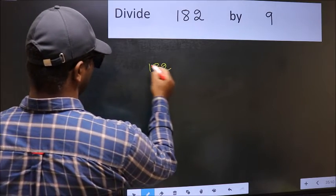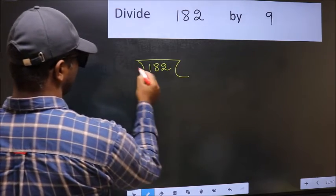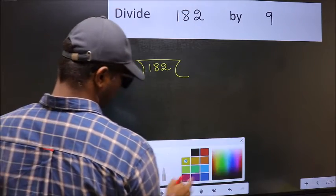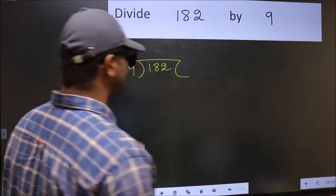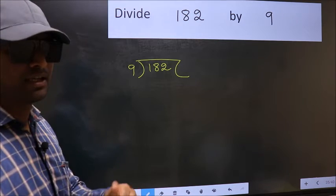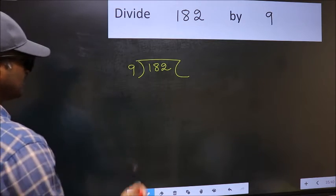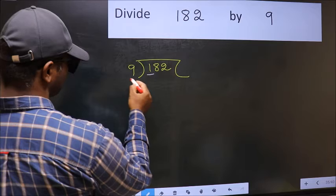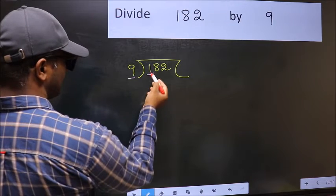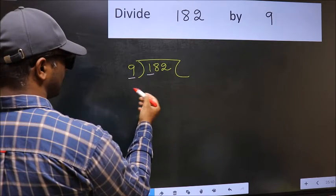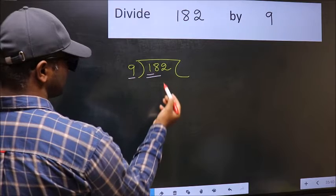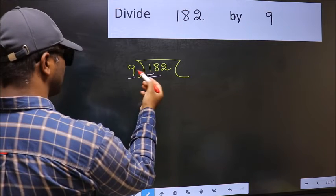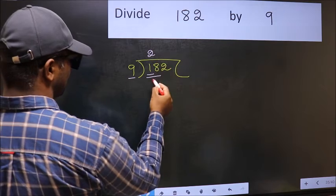182 and 9 here. This is your step 1. Next, here we have 1 and here 9. 1 is smaller than 9. So, we should take two numbers, 18. When do we get 18 in 9 table? 9 times 2 is 18.